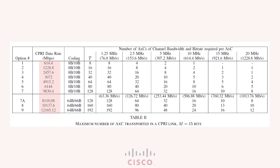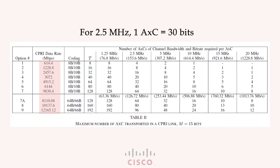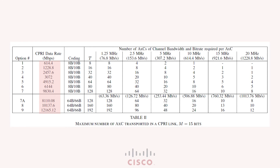Similarly we can calculate the CPRI rate for all the possible options. Now if you understand bits in the form of AxC, we will be able to derive which CPRI option we need to capacity plan for a certain channel bandwidth and MIMO layers. For a channel bandwidth of 2.5 megahertz, one AxC equals 30 bits — 15 bits of I and 15 bits of Q. So to support 120 bits of option 1 we allocate 4 AxCs, 240 bits of option 2 requires 8 AxCs, and 480 bits of option 3 requires 16 AxCs.